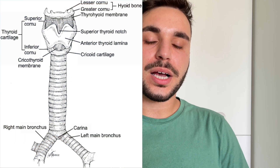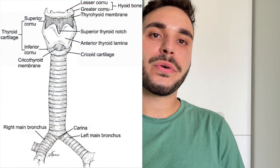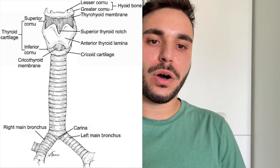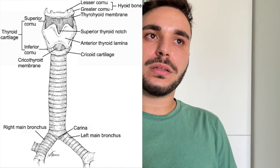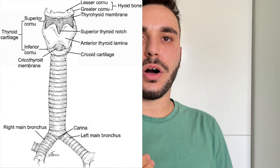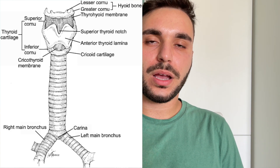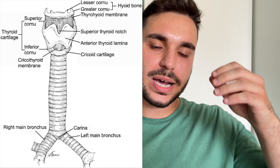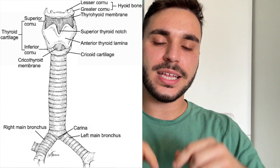Now we will speak about some basic anatomy and functionality of the bronchi inside the lungs. I will start from the trachea. The trachea arises from the cricoid cartilage and is a continuation of the larynx. This is the beginning of the tracheobronchial tree, which is a system of airways that passes air into the lungs.